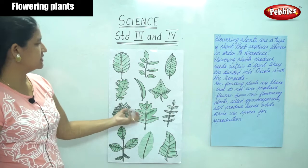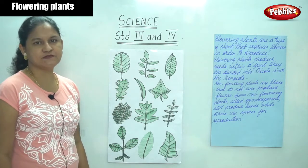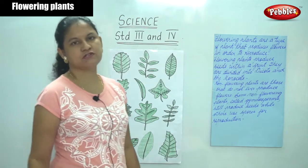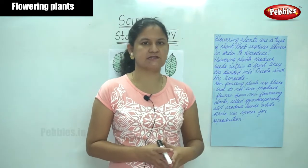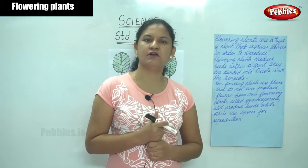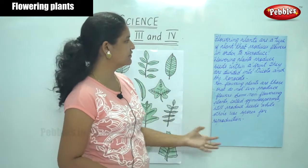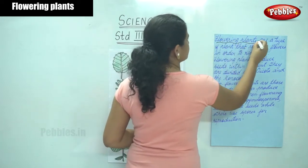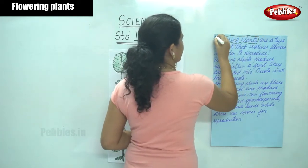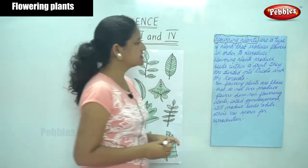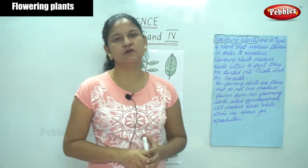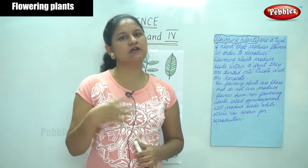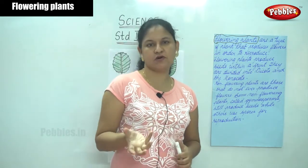These are the different types of leaves we have in front of us. Moving on to the two types of plants: flowering plants and non-flowering plants. Flowering plants are a type of plant that produces flowers in order to reproduce — that is, giving rise to a new plant or giving birth.